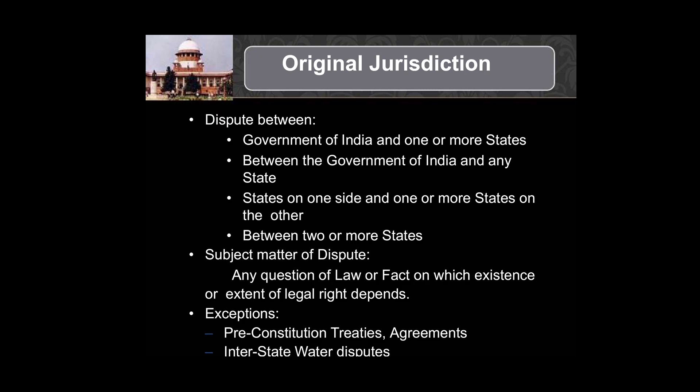Original jurisdiction means the cases which come directly to the Supreme Court at the very first instance. These kinds of disputes include when there is a dispute between the central government and one or more states, or between the government of India and other states on one side and one or more states on the other side, or when there is a dispute between two or more states.